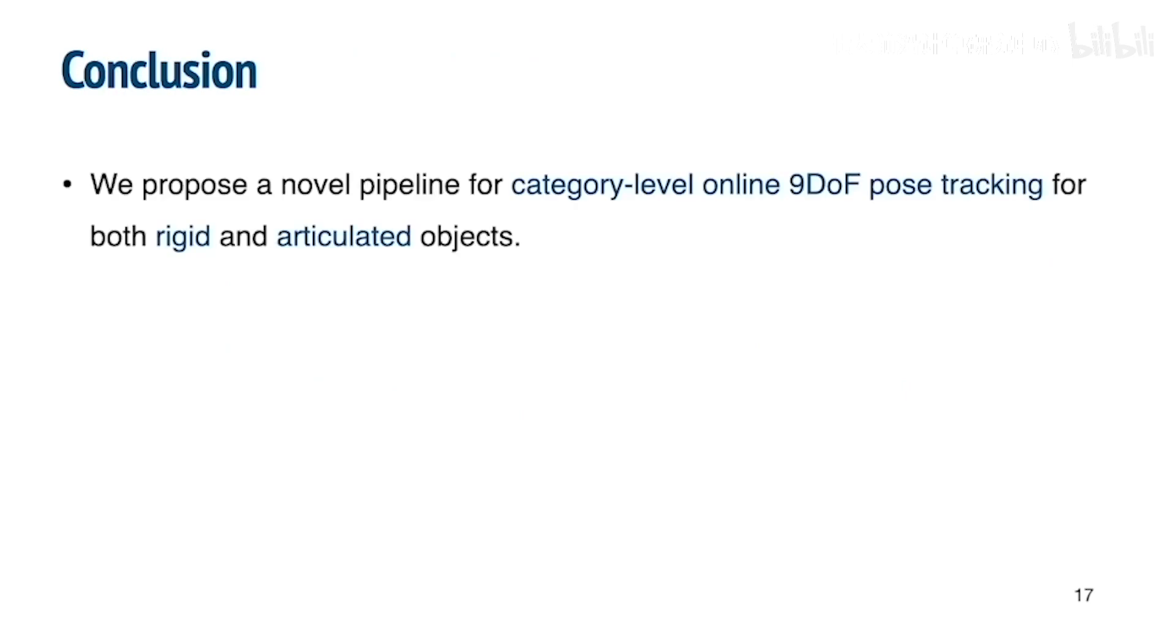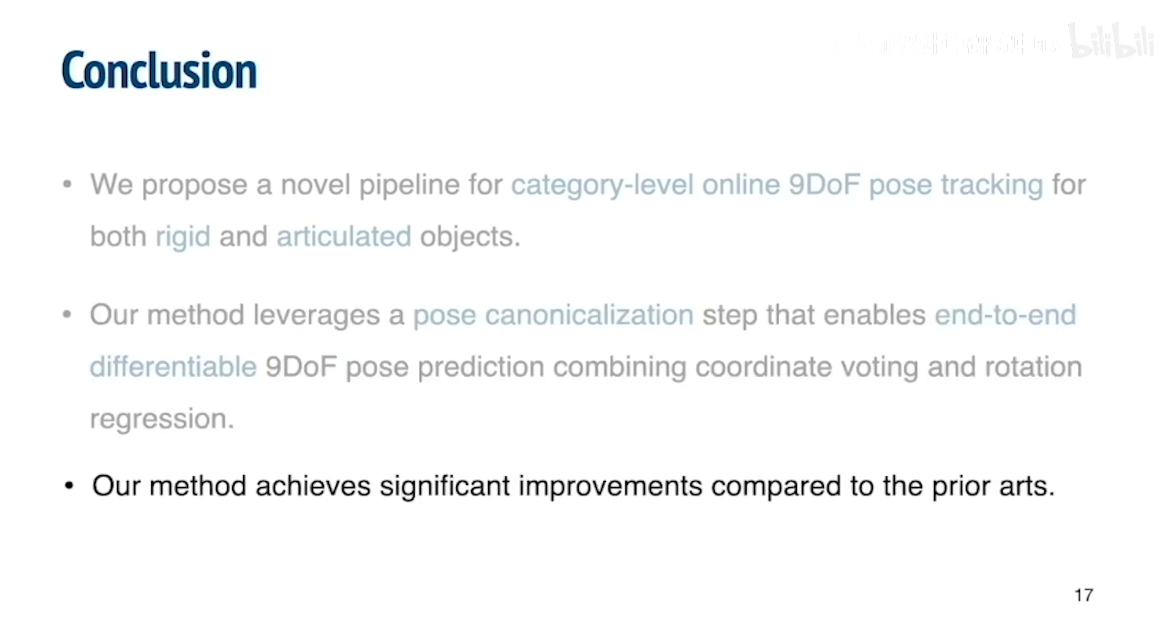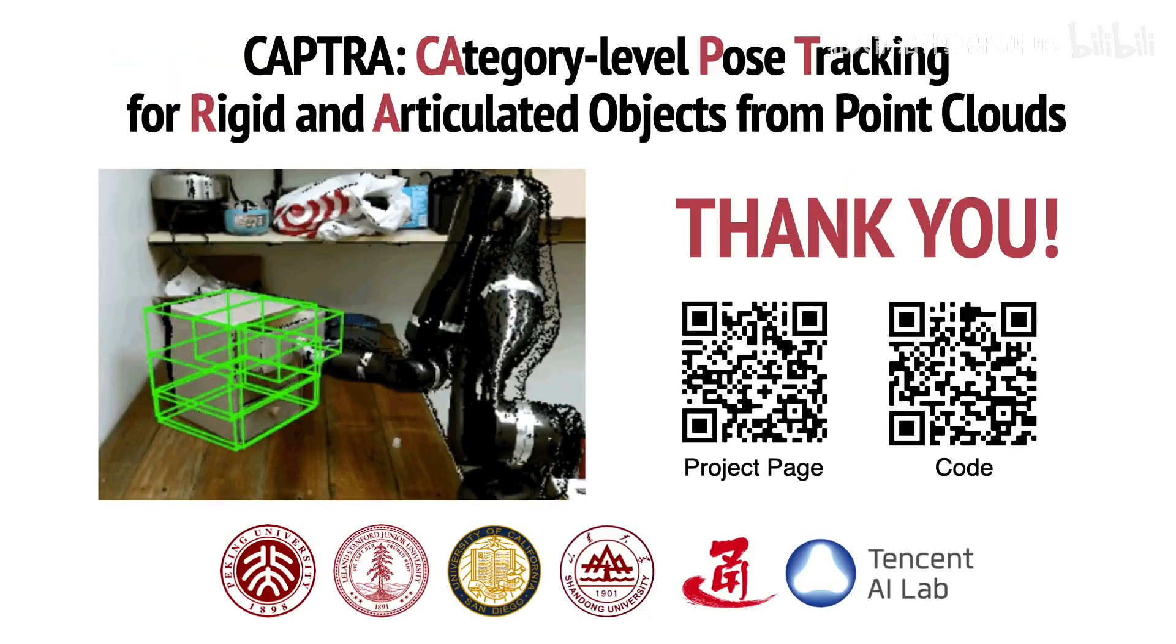To conclude, in this work, we propose a novel pipeline for category-level online 9 degrees of freedom pose tracking for both rigid and articulated objects. Our method leverages a pose canonicalization step that enables end-to-end differentiable 9-DOF pose prediction, combining coordinate voting and rotation regression. Our method achieves significant improvements compared to the previous state-of-the-art methods on all datasets. For more details, please refer to our paper. Thank you for watching.